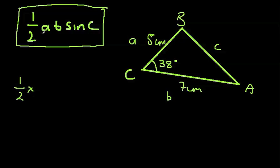Let's do this again. Half times by A, which we know is now 5 centimeters, times by B, which is 7 centimeters, times by sine C, which is this one. So we have 38 degrees.